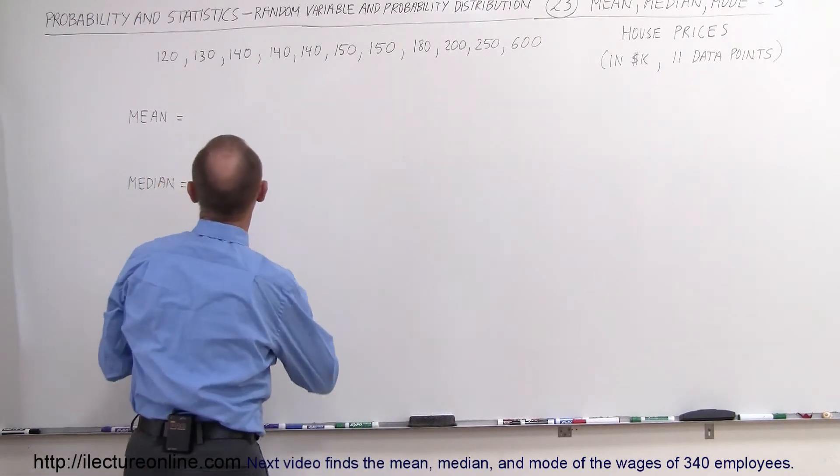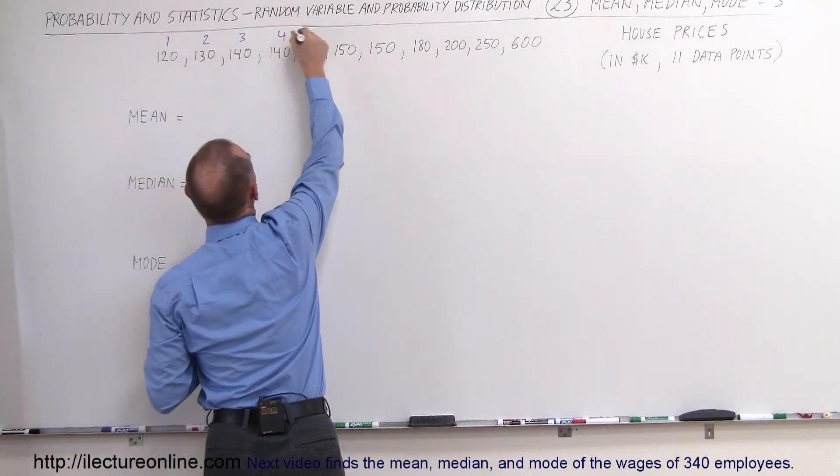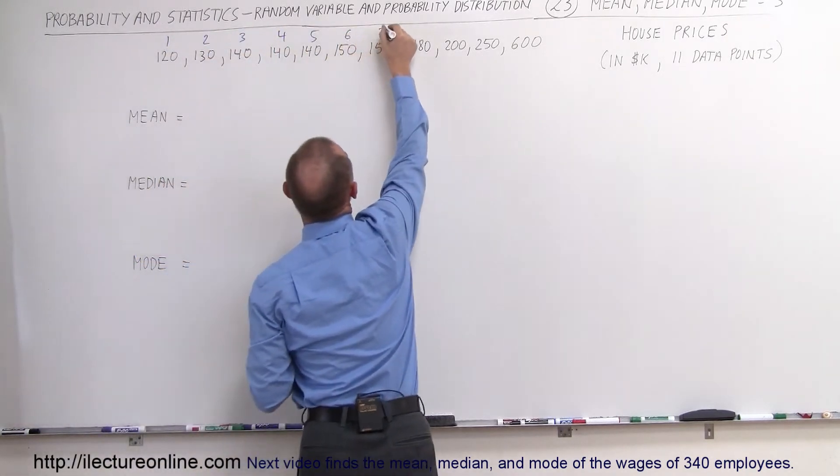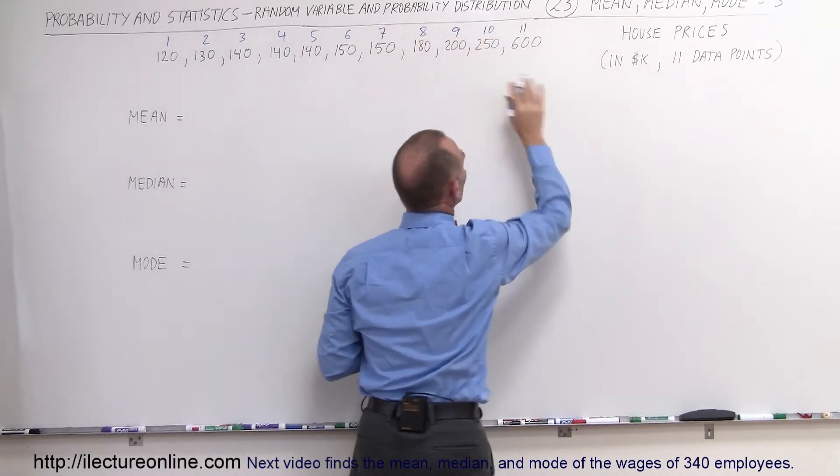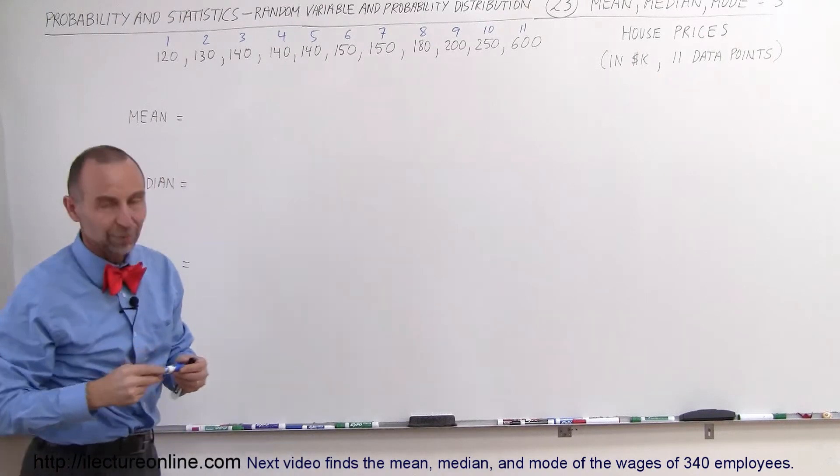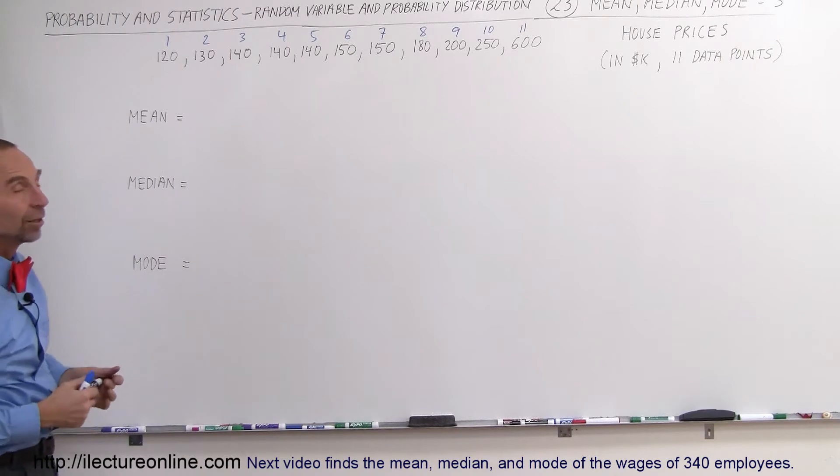So let's label these: 5, 6, 7, 8, 9, 10, 11. Notice conveniently they're already in order from the least expensive to the most expensive. So finding the mode would be relatively easy.